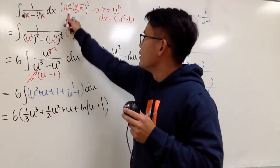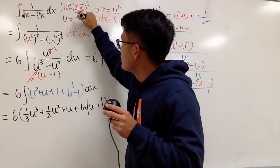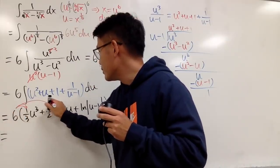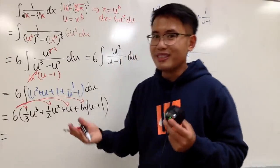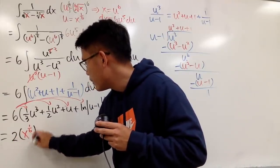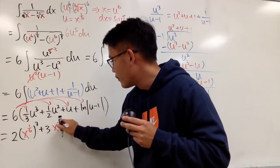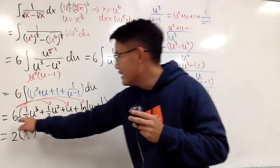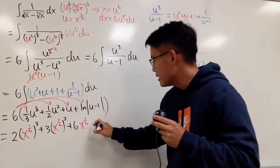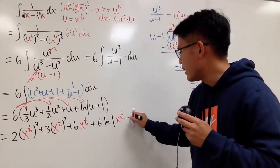Now we just go back to the x world. Remember, u = x^(1/6). I'll distribute the 6 into the parentheses and substitute. 6 times 1/3 is 2, and (x^(1/6))^3 = x^(1/2), so that term is 2√x. 6 times 1/2 is 3, and (x^(1/6))^2 = x^(1/3), so that's 3∛x. 6 times 1 is 6, giving 6·x^(1/6). And 6 times ln|u−1| becomes 6 ln|x^(1/6) − 1|.